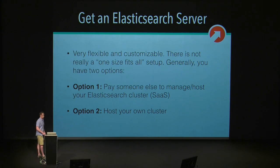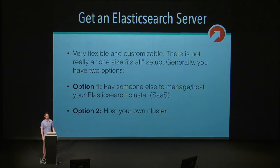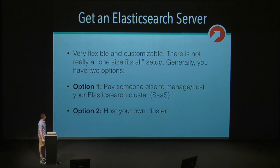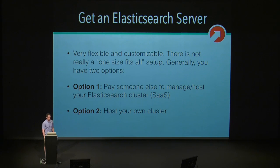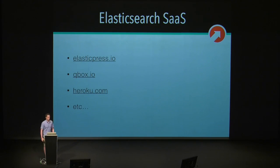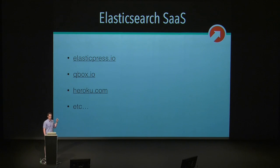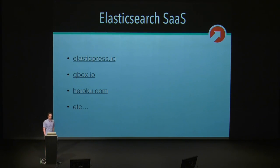Step one for getting this going on your website, on a client's website, or maybe just playing around locally, is you need an Elasticsearch server. You basically have two options: you can go through one of the many SaaS providers, or you can host your own cluster. If you're doing this locally, it's super easy to spin up Java and Elasticsearch — it takes about five minutes to install. Here's a list of some Elasticsearch SaaS products: Elasticpress.io, which is 10up's enterprise product; Qbox.io, which is relatively affordable; Heroku; Amazon; and pretty much every major cloud-based infrastructure company offers some sort of Elasticsearch SaaS product at this point.